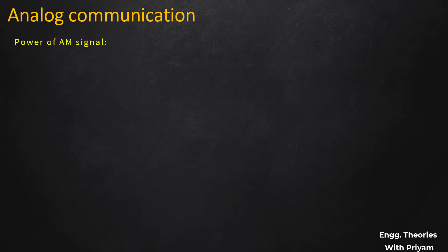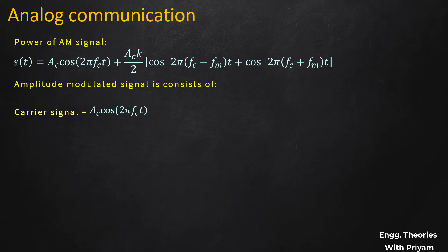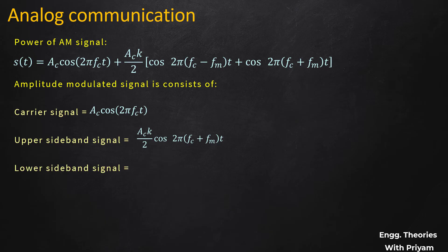From Equation 8, the amplitude modulated signal consists of three components: the carrier signal Ac·cos(2π·fc·t), the upper sideband signal (Ac·k/2)·cos[2π·(fc + fm)·t], and the lower sideband signal (Ac·k/2)·cos[2π·(fc − fm)·t]. All three are cosine signals.